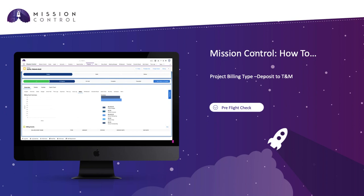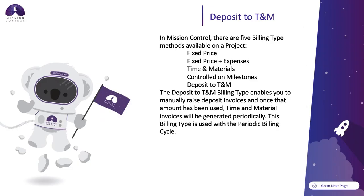Thanks for tuning in to this Mission Control how-to video on the project billing type, Deposit to T&M. In Mission Control, there are five billing type methods available on a project: Fixed Price, Fixed Price Plus Expenses, Time and Materials, Control on Milestones, and Deposit to T&M.